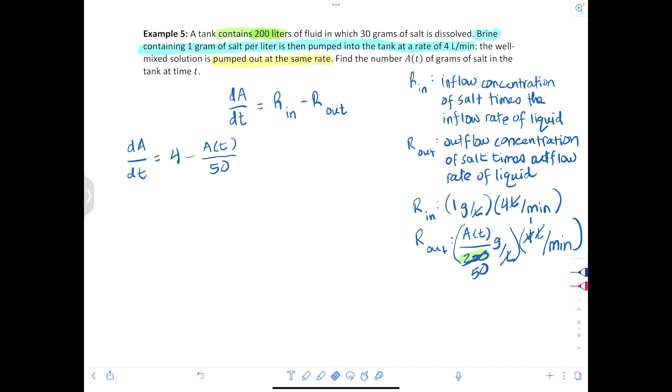Alright now instead of calling it A(t) let's just call it A and get it to the other side so we have it linear. So we'll have dA/dt plus I'll write it as 1/50 times A equals 4.